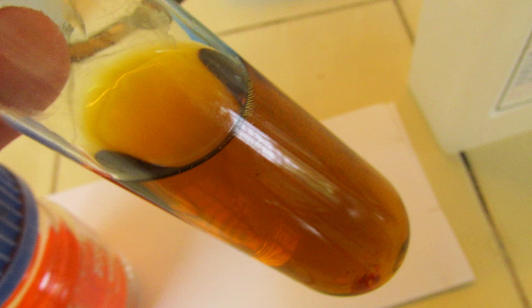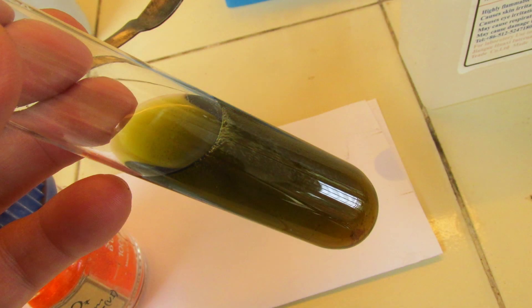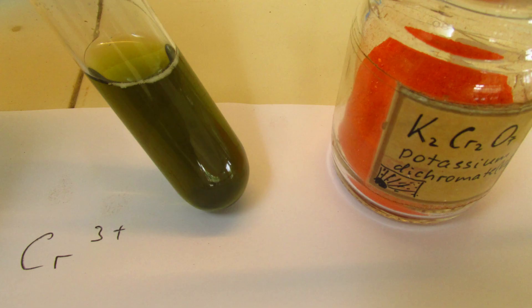If I add more ethanol though, and help the reaction by heating up the mixture, I would see that color changes nicely into green. Green is due to reduction of chromium 6 in potassium dichromate 6 into chromium 3 ions, which are green in water solution.